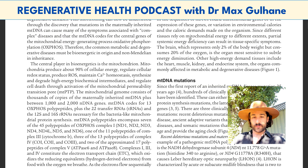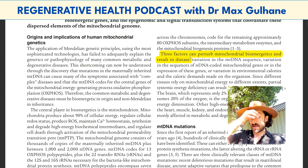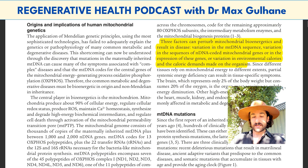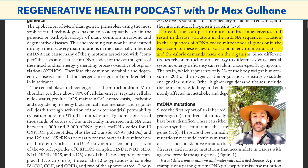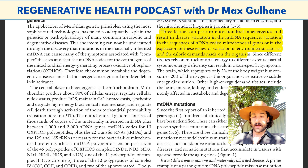Let's have a look at what he says exactly. The three factors that can perturb mitochondrial bioenergetics and result in disease are: variation in the mitochondrial DNA sequence; variation in the sequences of nuclear DNA-coded mitochondrial genes, or in the expression of those genes; or variation in environmental calories and the caloric demands made on the organism. He also makes the point that since different tissues rely on mitochondrial energy to different extents, partial systemic energy deficiency can result in tissue-specific symptoms, highlighting the brain, heart, muscle, kidney, and the endocrine system.